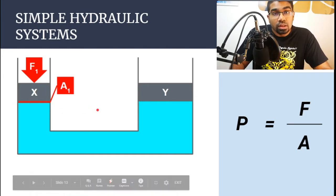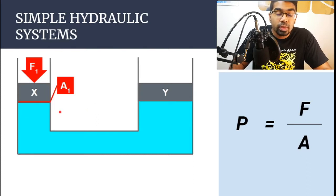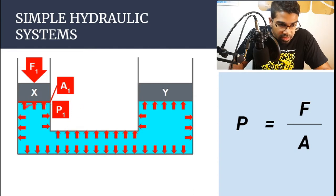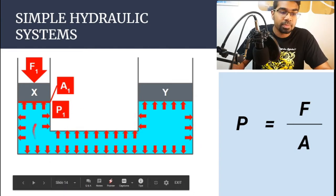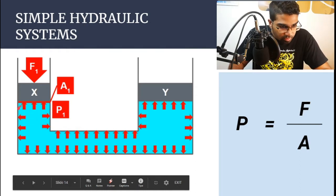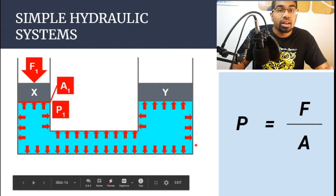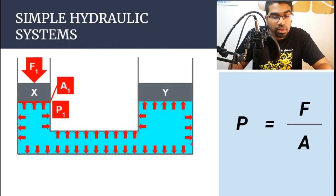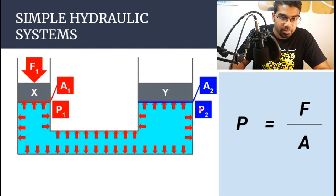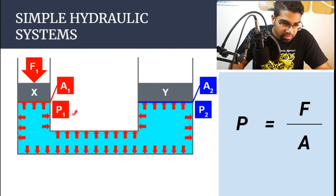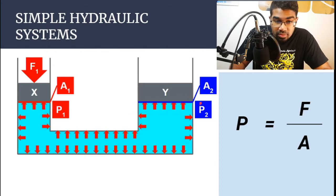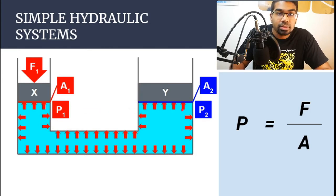According to Pascal's Principle, the pressure in an enclosed liquid is transmitted equally in all directions. So the pressure P1 applied here is transmitted throughout the whole enclosed liquid with the same magnitude — the pressure is the same everywhere, and most importantly, it is the same as the pressure under the second piston at area A2. Since A2 is much larger than A1, applying the same pressure over a larger area generates a larger force on the second piston.